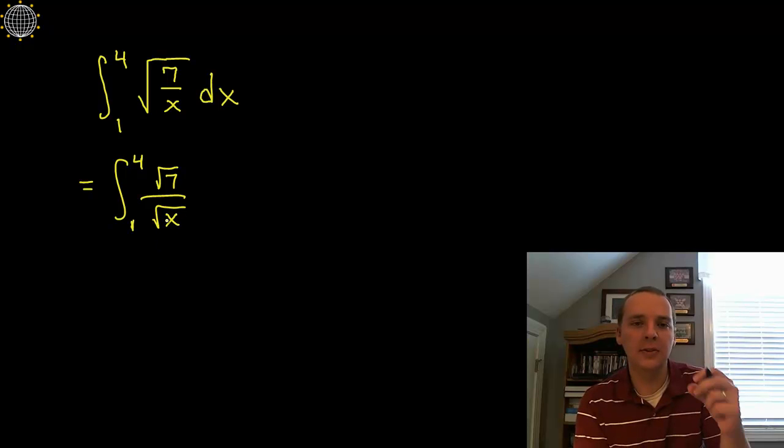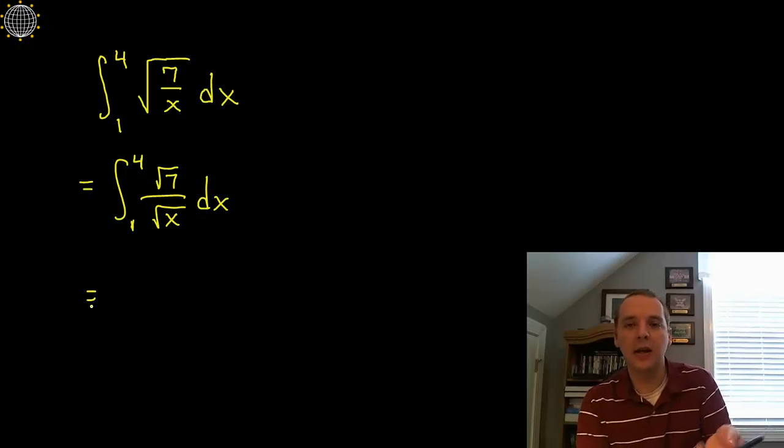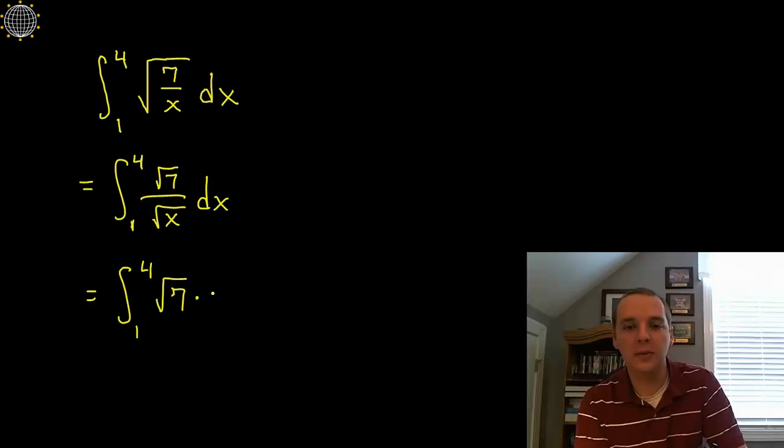When having the square root of x in the denominator I think I know how to handle that as well. I can bring that up to the numerator and there won't be division at all anymore if you write it as the square root of seven times x to the negative one half. A one half power is the same thing as a square root operation and bringing it up from the numerator means that we would make the exponent negative.